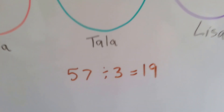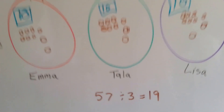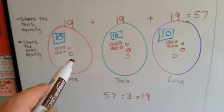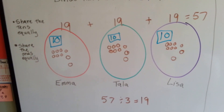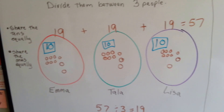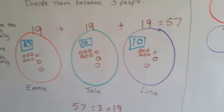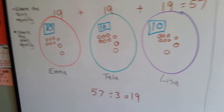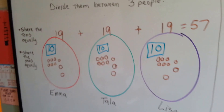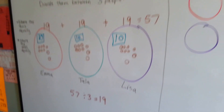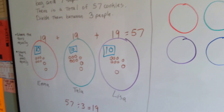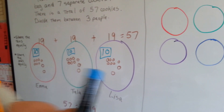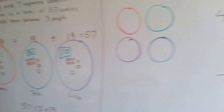See how we had to open up those bags of cookies to give them separate cookies so it was even? That's what regrouping is — you take the tens and regroup them into ones so that you can split them evenly.